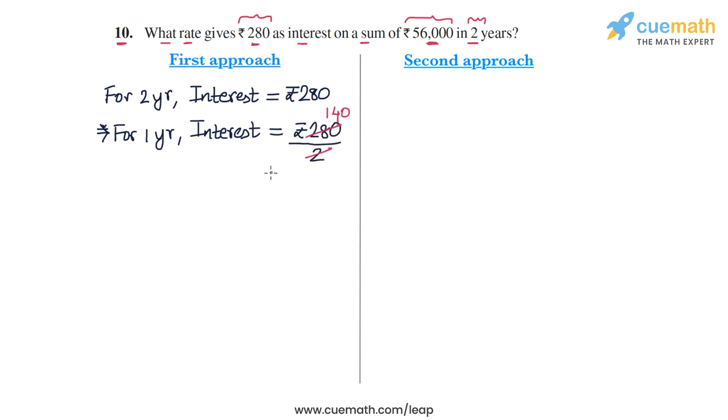So the interest amount for one year will be ₹140. What this basically means is that on ₹56,000 as your principal amount, the interest per annum is ₹140.